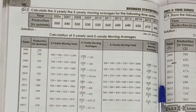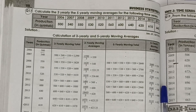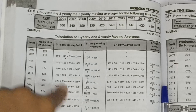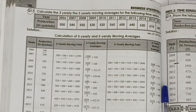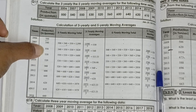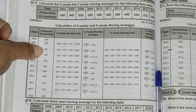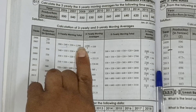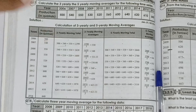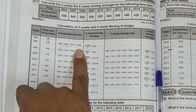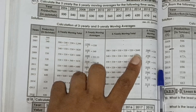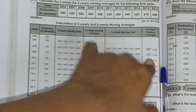Here, calculate 3 years moving average as well as 5 years moving average from the following time series. Years and production values are given. For 3 years: add the first 3 numbers — 500 + 540 + 550 = 1590 — and place it at the middle number (540). Next skip one and add the next 3: you get 1620, place at the next middle number. Then divide by 3 for the 3-year moving average. For 5 years: add the first 5 numbers, place at the middle, then divide by 5.